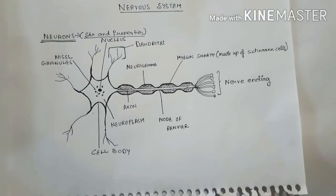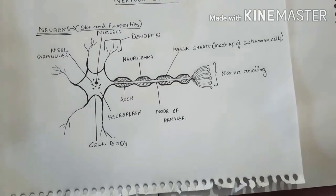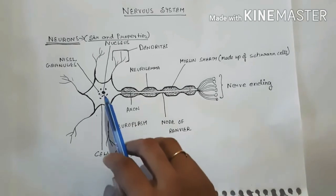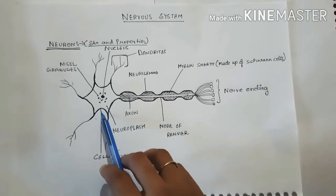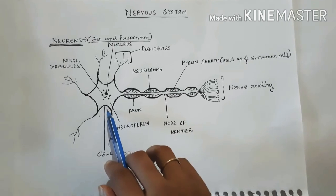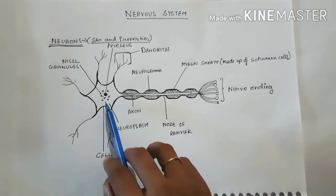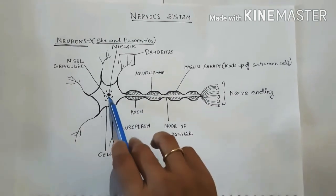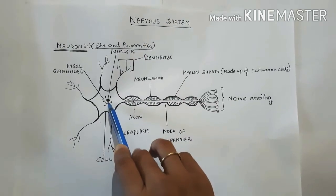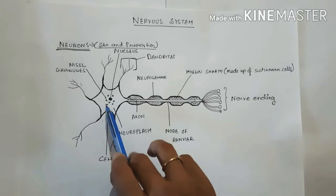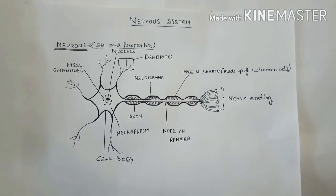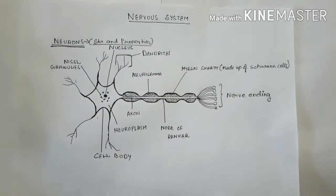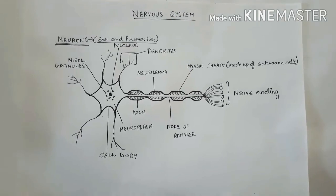The cell body is also called the cytone, and it contains dense cytoplasm. The cytoplasm of the cell body is also called neuroplasm. It contains a centrally located nucleus. Around it there are granules called Nissl granules, which are a collection of ribosomes involved in the synthesis of protein.